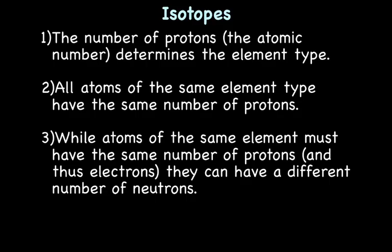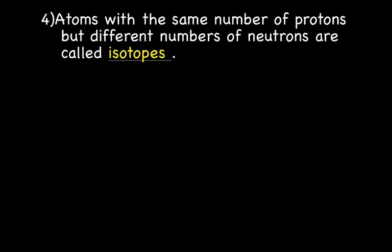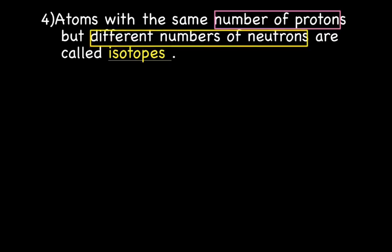Here's where things change up a little bit. While atoms of the same element must have the same number of protons, they can have different numbers of neutrons. Not all sodium atoms will have the same number of neutrons — there might be a sodium atom with 11 neutrons, or 12 neutrons, or 9 neutrons. So atoms with the same number of protons but different numbers of neutrons are called isotopes.